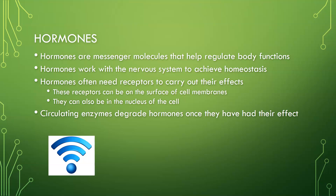I often like to think of hormones as little Wi-Fi signals. They are secreted out and then they float into your bloodstream, into your fluid, and then go bind on a receptor to get received and have the desired effect there. Whereas the nervous system could be akin to a wired connection. Hormones often need receptors to carry out their effects, so they need to be received and docked on receptors. Those receptors could be on the surface of cell membranes, but they can also be in the nucleus of the cell. And then often circulating enzymes can degrade hormones once they have had their effects.